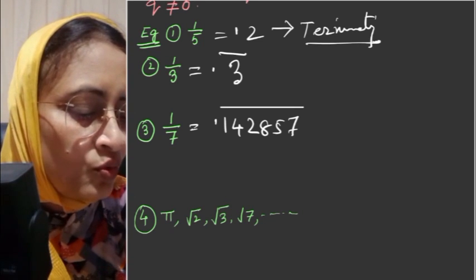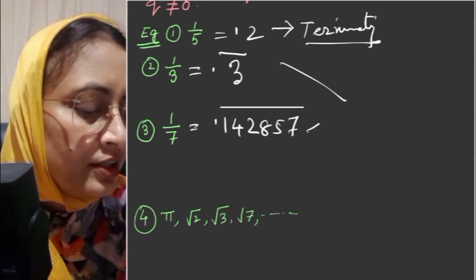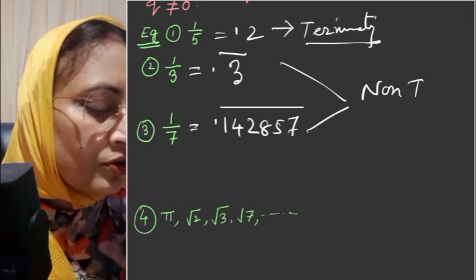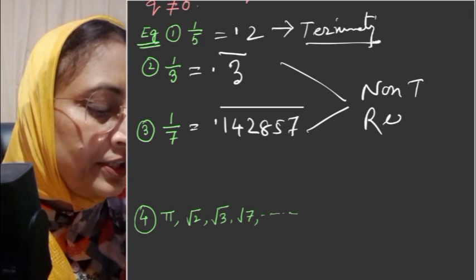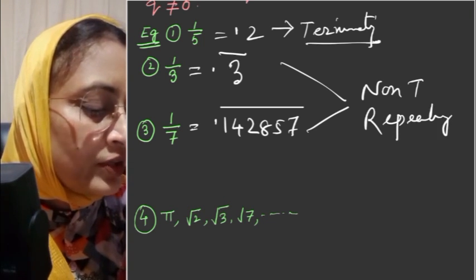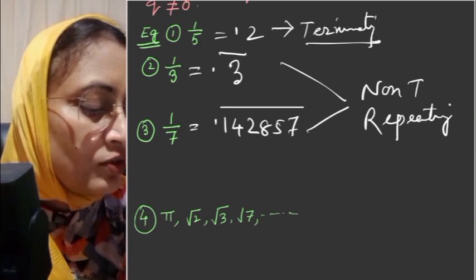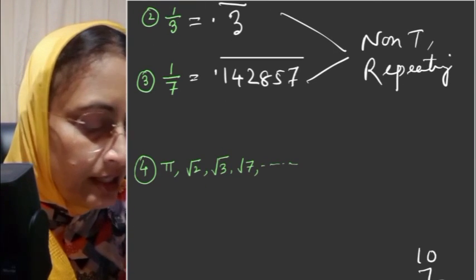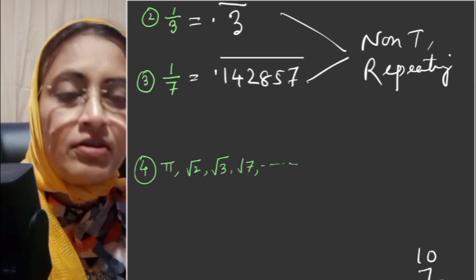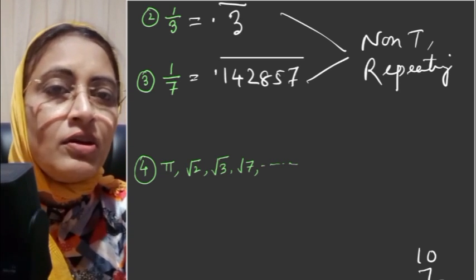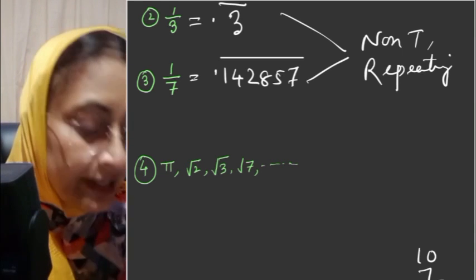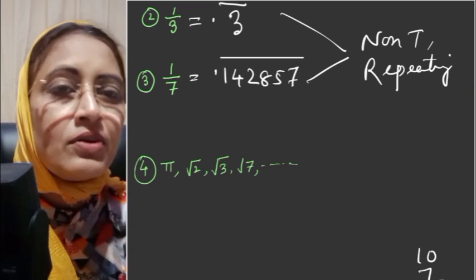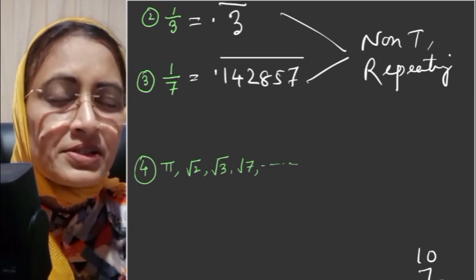So these are called non-terminating repeating decimals, and those are rational numbers. But what is our irrational number? Examples include pi, root 2, root 3, root 7 — these are all irrational numbers.